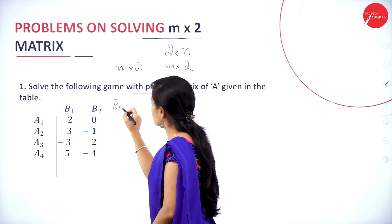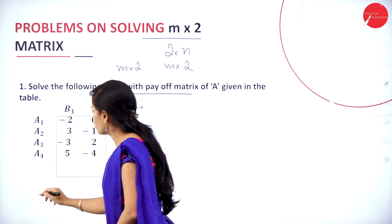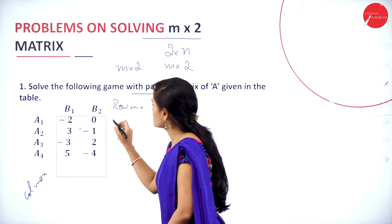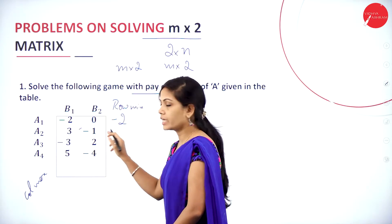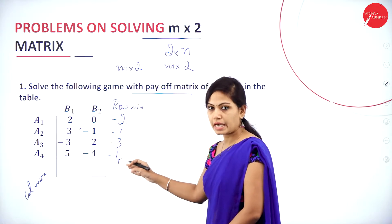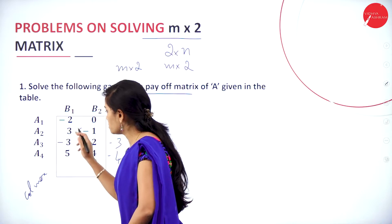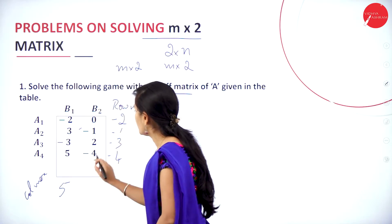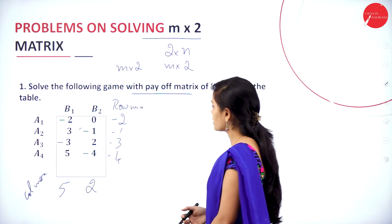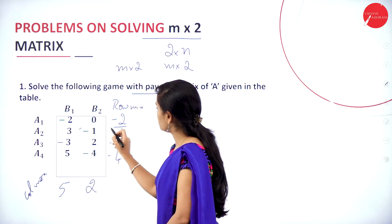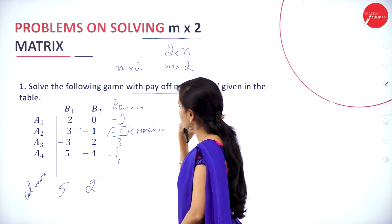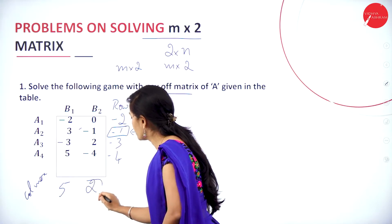The first step is to find the row minima and column maxima. The minimum value in row 1 is −2, row 2 is −1, row 3 is −3, and row 4 is −4. So the row minimum values are −2, −1, −3, and −4. The column maximum values are 5 and 2. The maximin value — the maximum of the row minima — is −1.